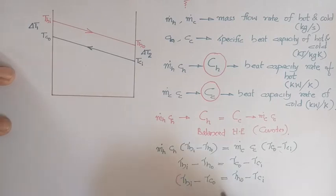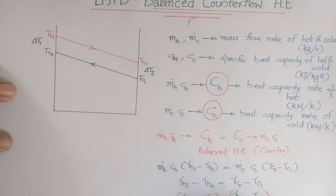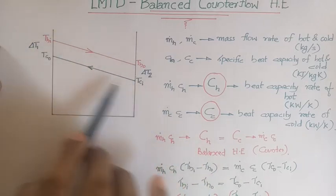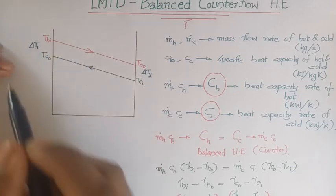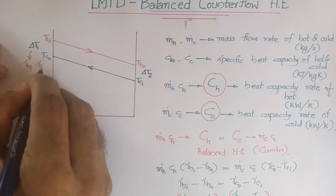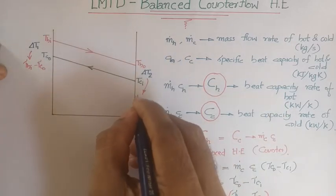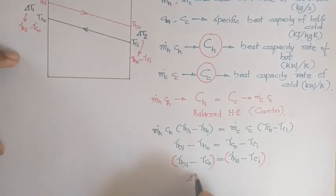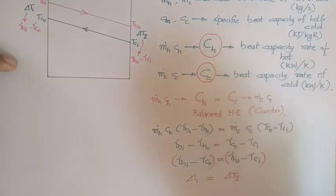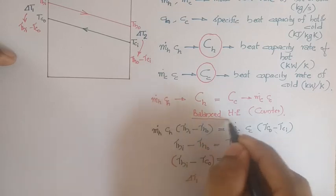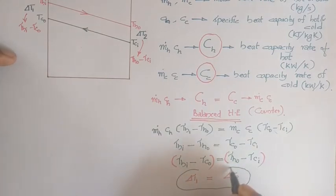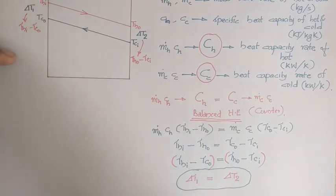Observing the temperature distribution curve for a counter flow heat exchanger, hot fluid moves left to right and cold fluid moves right to left. Delta T1 at the inlet is T_HI − T_CO and delta T2 at the outlet is T_HO − T_CI. For a balanced counter flow heat exchanger, delta T1 equals delta T2, meaning the temperature difference at inlet and outlet are the same.